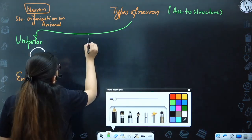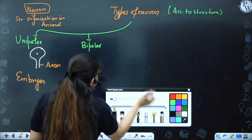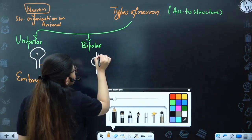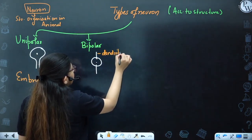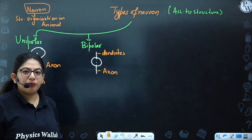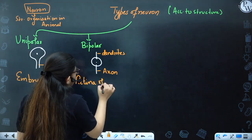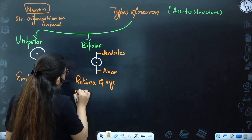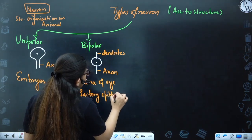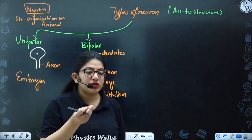The second category is Bipolar. In bipolar, we have two poles or two polarities — the center portion of a neuron has one dendrite and one axon, so two poles are there. We call it bipolar. Where do you find bipolar type of neurons? In the retina of the eye and in your olfactory epithelium — the epithelium present in the nose that helps you to smell.